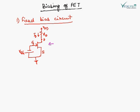This is a fixed bias circuit of FET. This is the FET. The drain is connected with RD, drain resistance, and it is connected to the drain voltage battery.